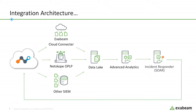The first and preferred method is using an Exabeam cloud connector, which is designed for direct communication with the Netscope REST API. Customers could also use the Netscope OPLP, or on-prem log parser, which serves as a bridge to make direct REST API calls and then forward event data into the Exabeam platform. Another option is to directly ingest log data from a current SIEM or centralized log management platform.